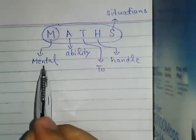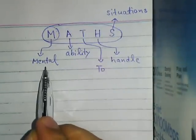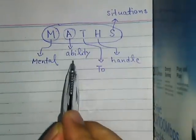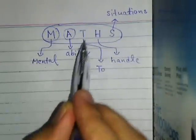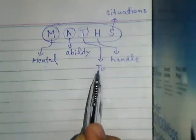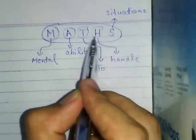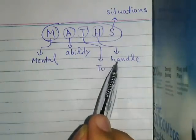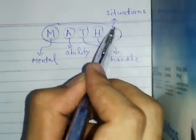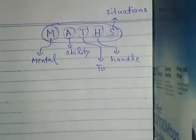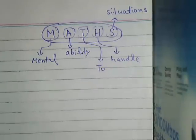M stands for Mental, A for Ability, T for To, H for Handle, and finally S for Situations. So collectively, the abbreviation of maths is Mental Ability To Handle Situations.